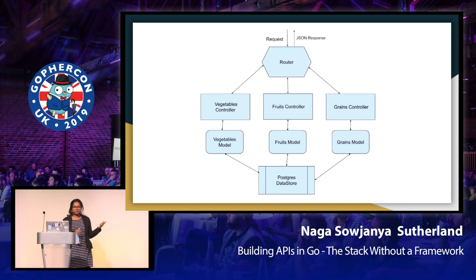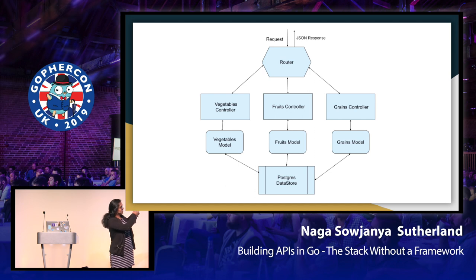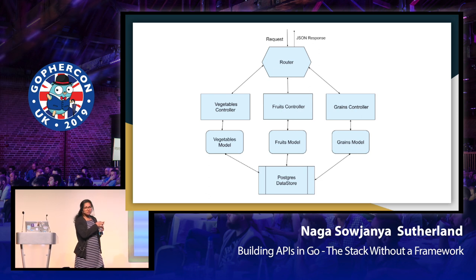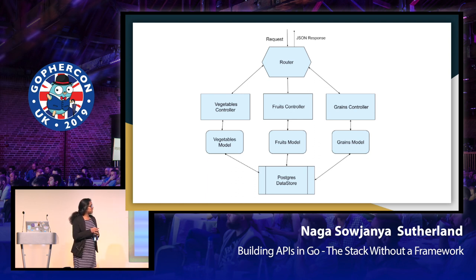If you have used Rails before, you have noticed this set of architecture. This is the architecture that I've implemented in this API. The router takes in the incoming request and passes it to the right controller based on the handler. The controller is responsible for getting, updating, or creating data with the model. For this particular problem, I've used Postgres as my datastore — a really simple API design.